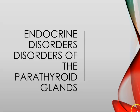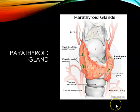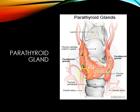Endocrine disorders of the parathyroid glands. The parathyroid glands are embedded on the posterior surface of the lobes of the thyroid gland. You can see them right here and right here — these two little nodules. They secrete parathyroid hormone and regulate calcium and phosphate levels in the body.